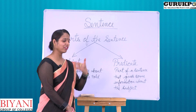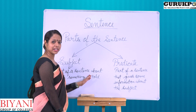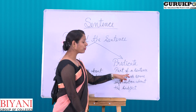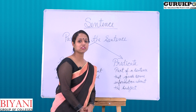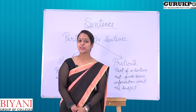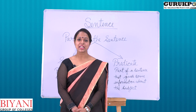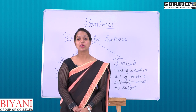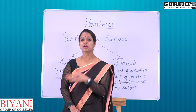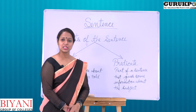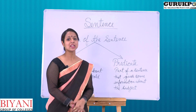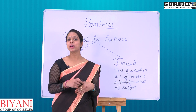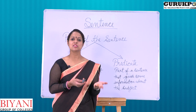What is subject and what is predicate? Subject is a part of a sentence about which something is told, and predicate is that part of a sentence that gives some information about the subject. For example, 'he runs.' In this sentence, 'he' is working as a subject and 'runs' is working as a predicate, because 'he' is the doer about which something is told. 'Runs' is a predicate because it gives information that he is running.